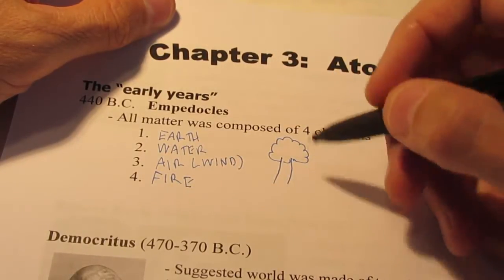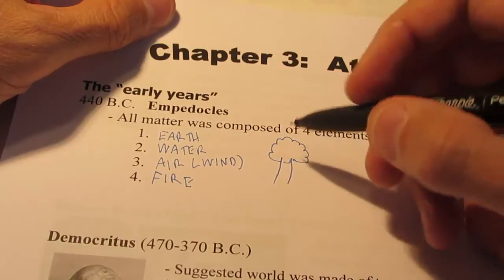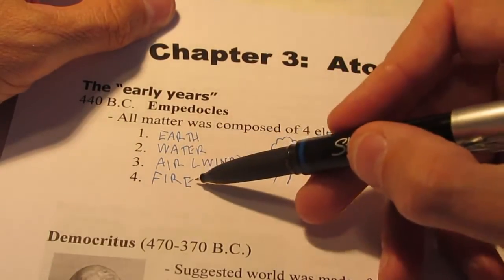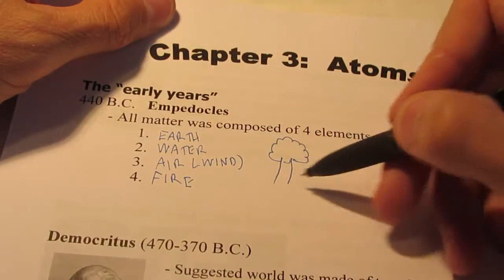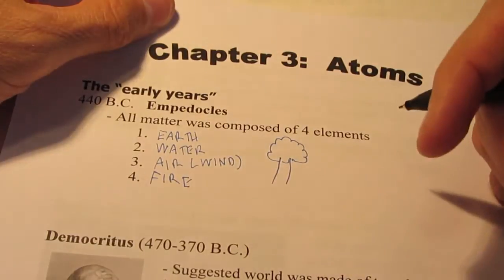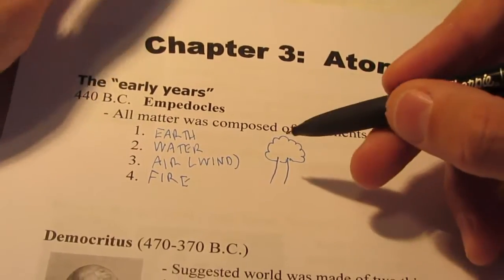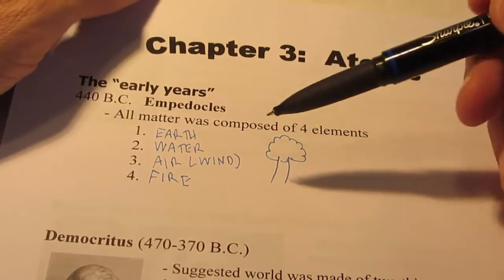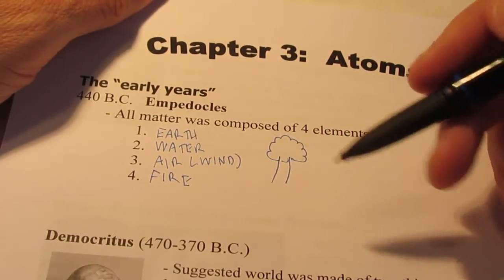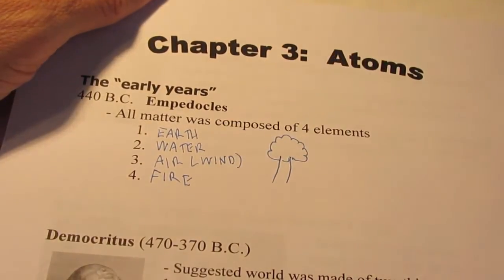And then every once in a while, of course, a tree would catch on fire, or perhaps they'd take part of that tree and they'd throw it in their fireplace and they would burn it, and then we would see fire. So a tree, you could see, was composed of all four of these elements, a mixture of all four. So that was the early belief, that all matter was composed of either one or a mixture of these four different elements: earth, water, air, and fire.